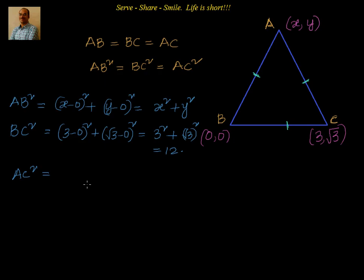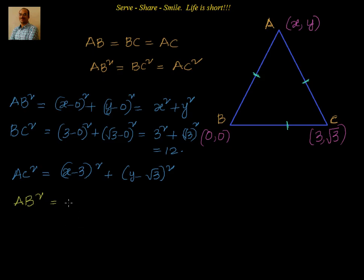Now let's find AC². AC² = (x − 3)² + (y − √3)². Our strategy will be: first equate AB² = AC² to get a relation between x and y, then use AB² = BC² with that relation to find the actual values.